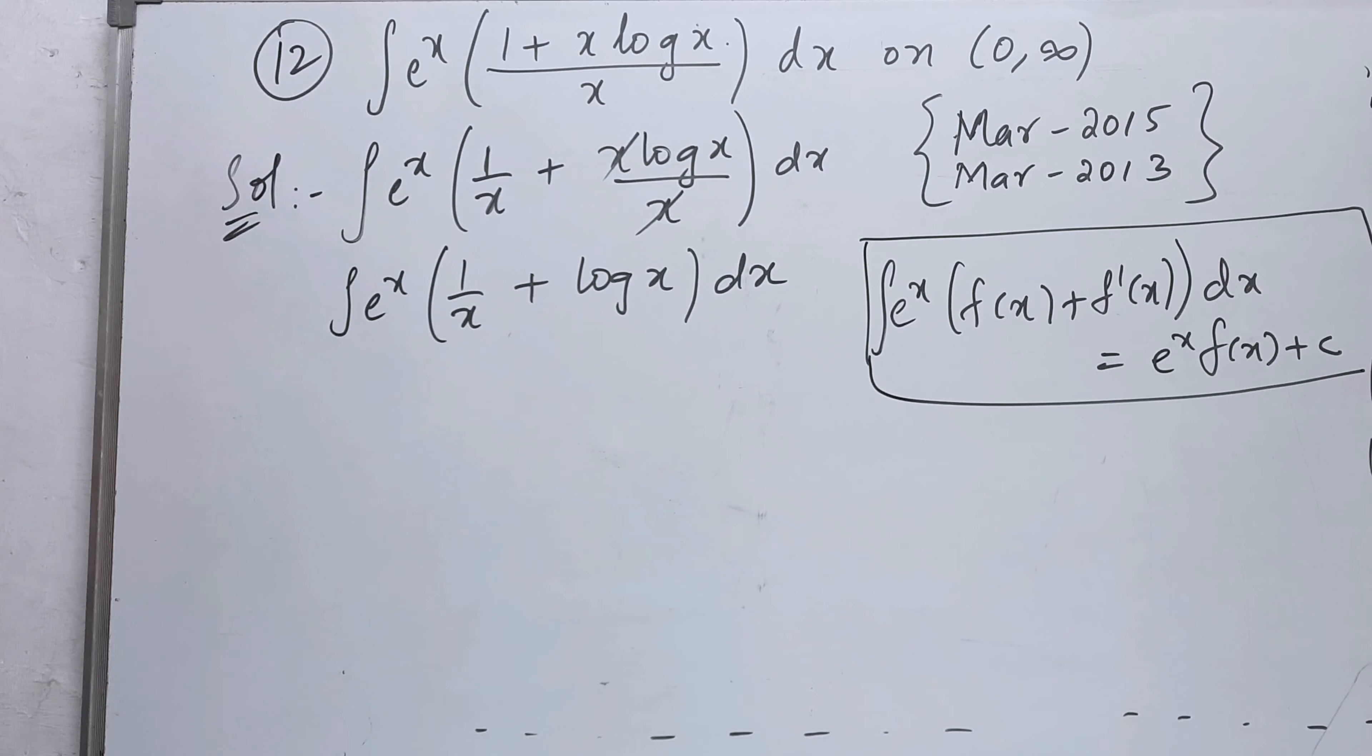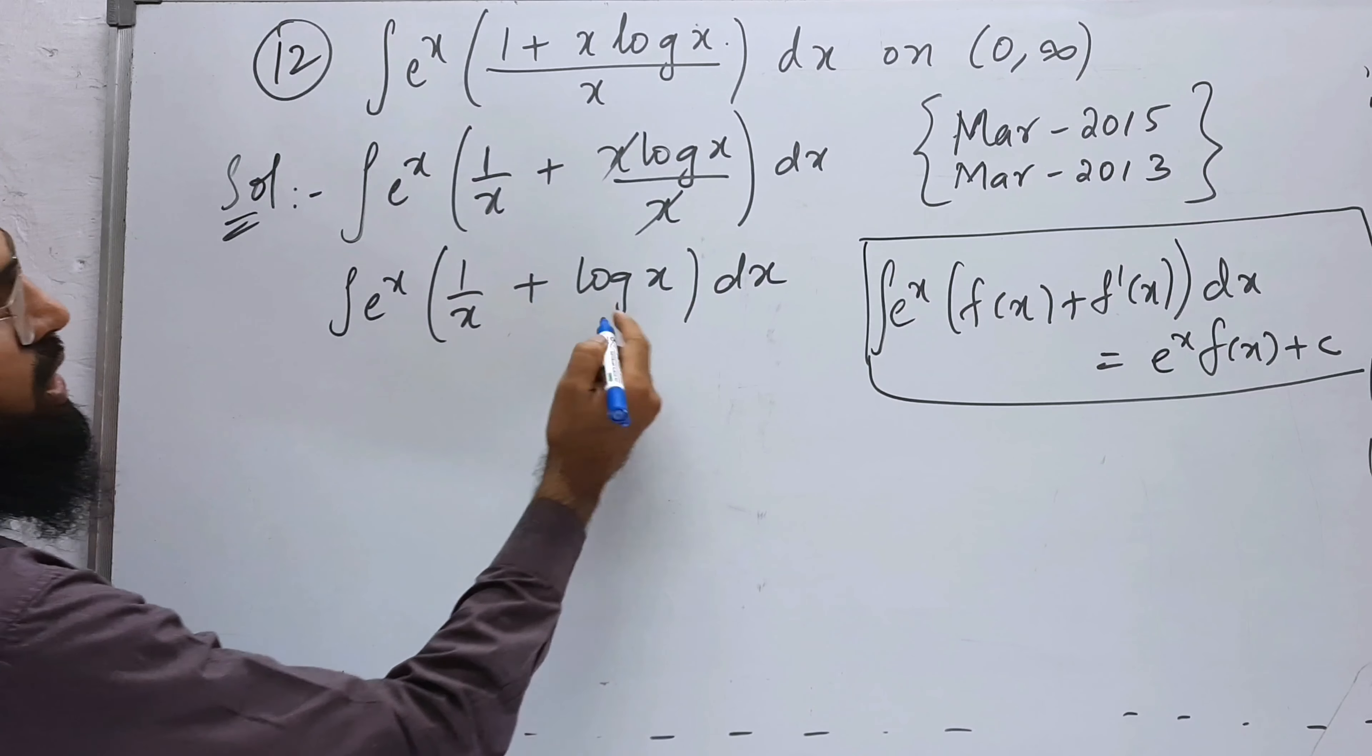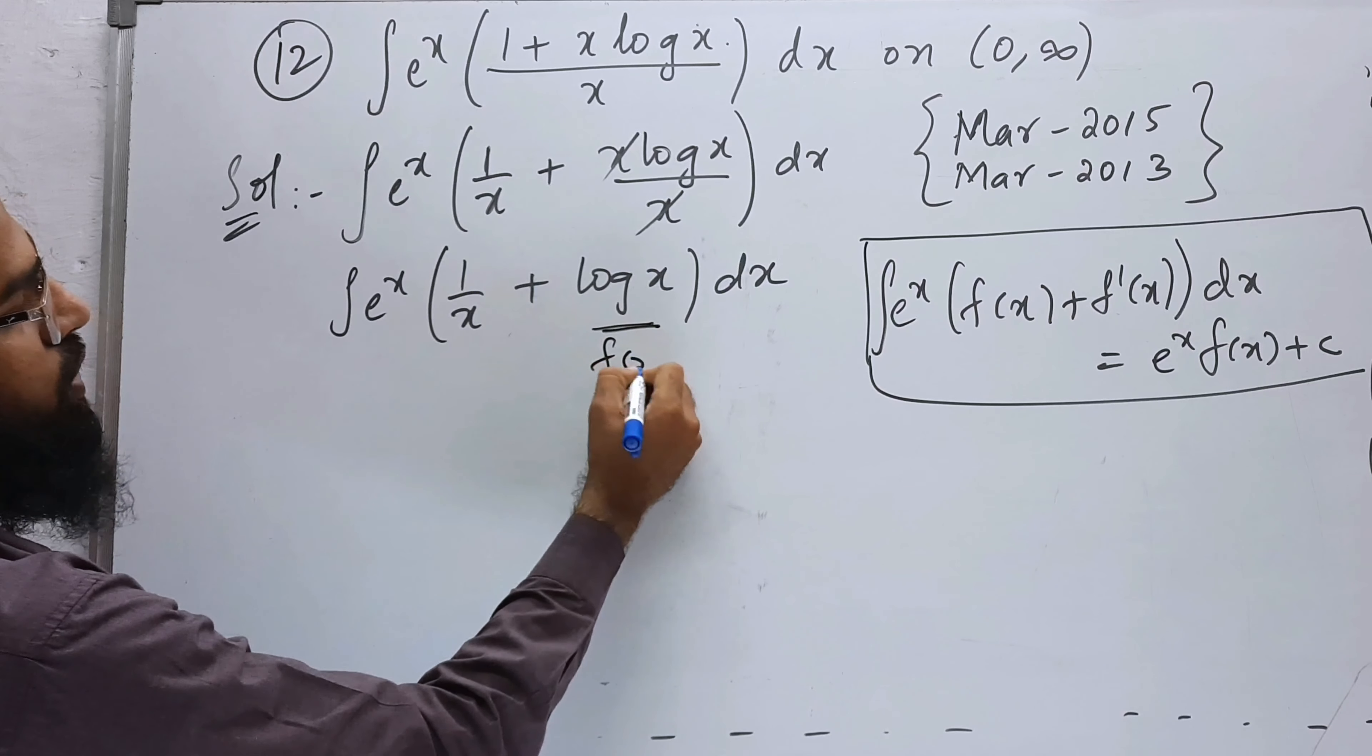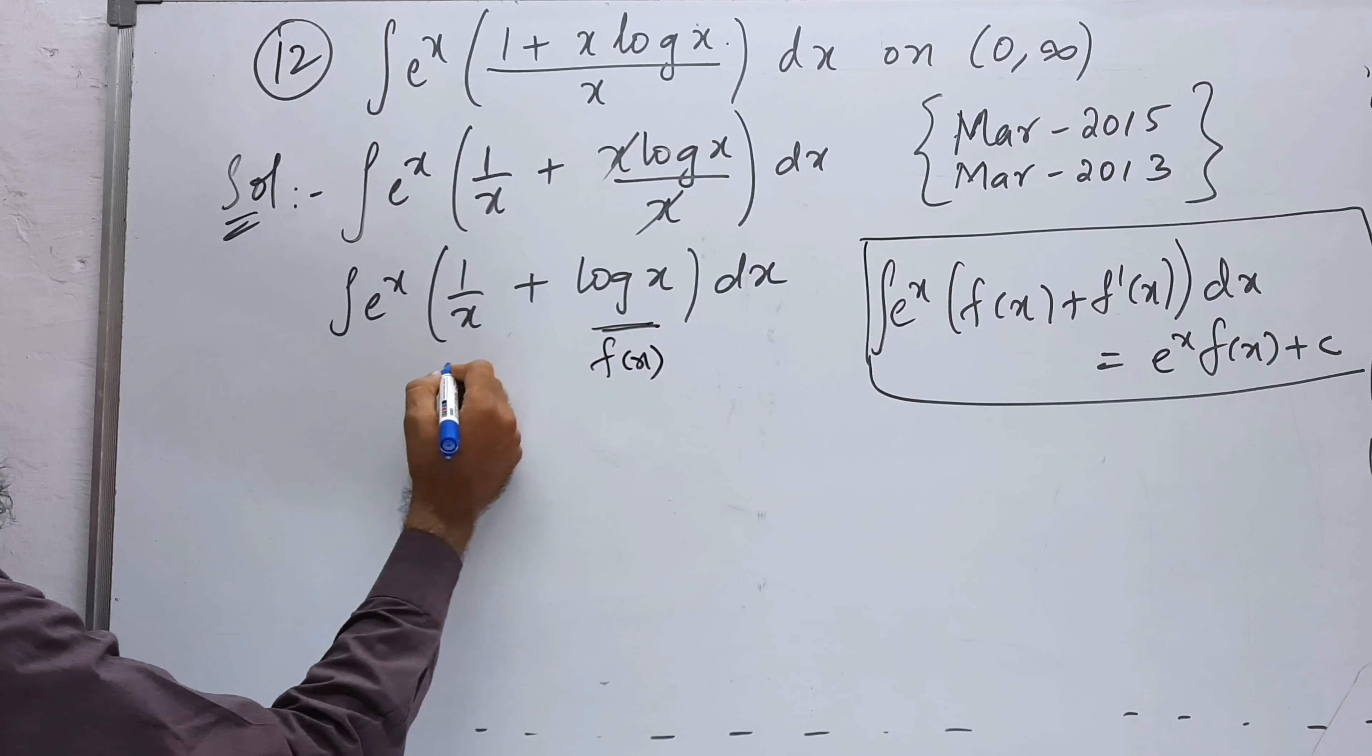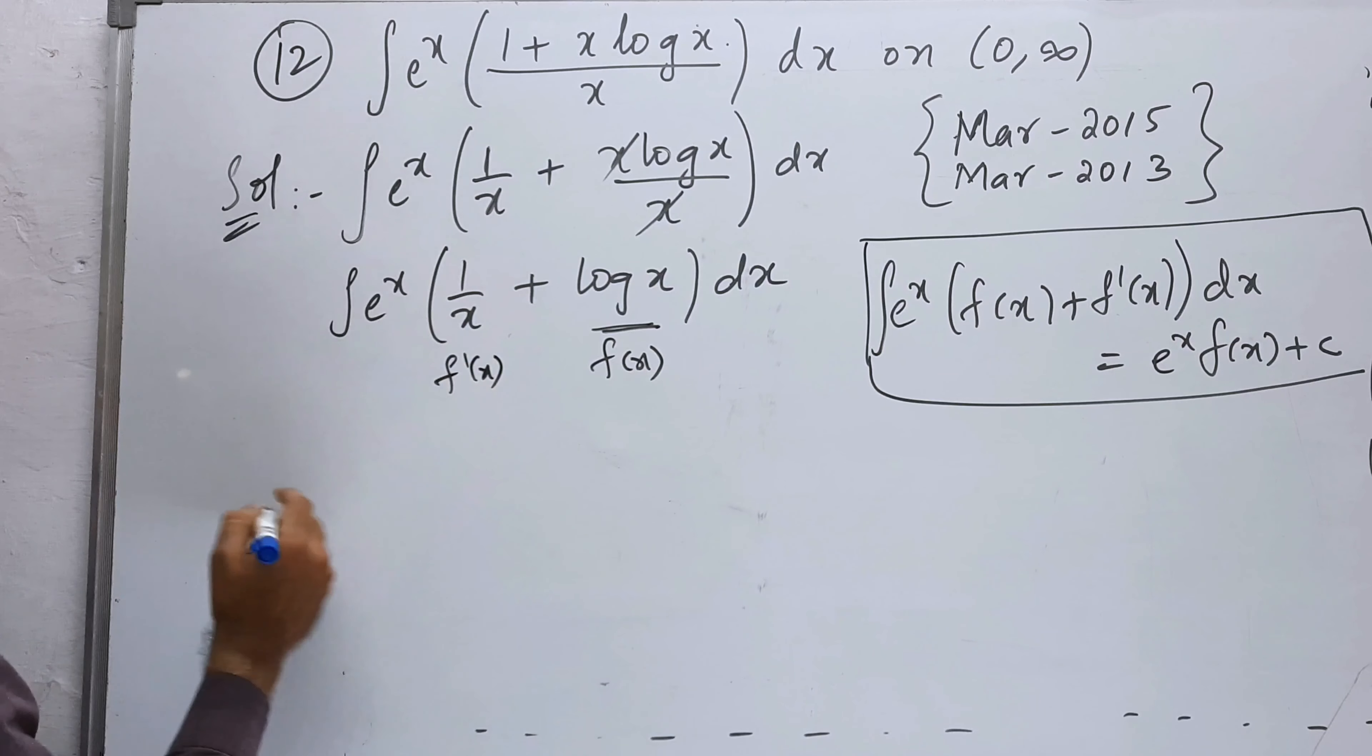This formula we have to use. Here f of x is log x, and f dash of x is 1 by x.